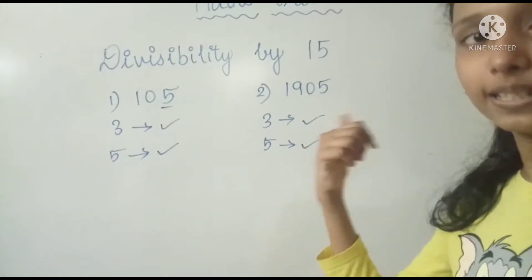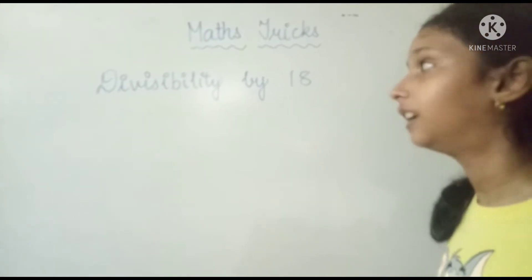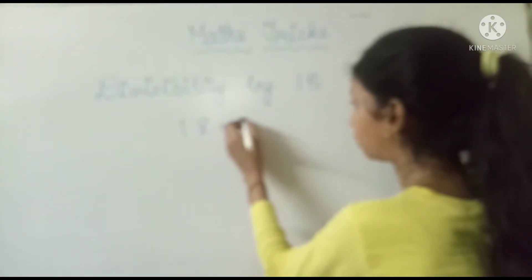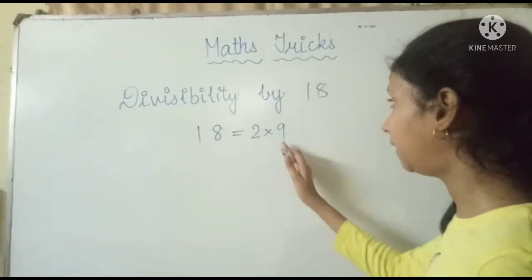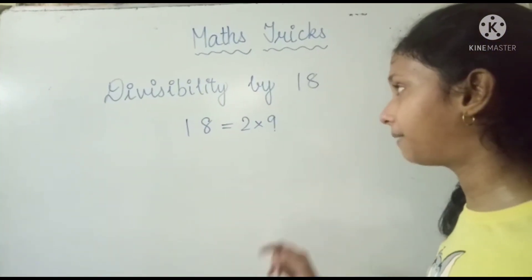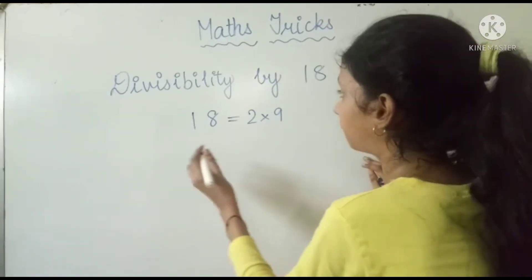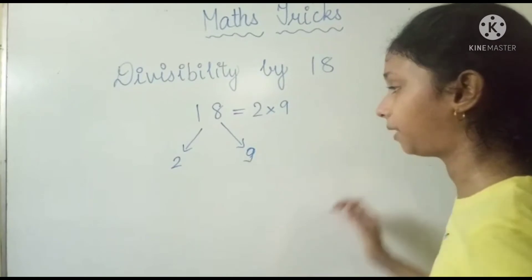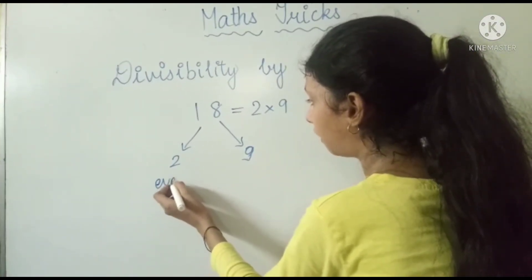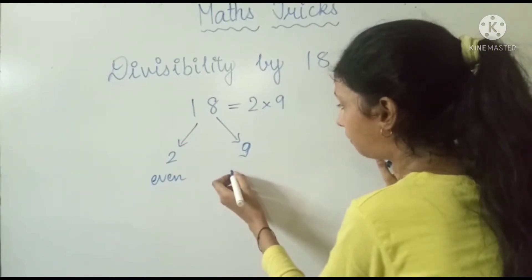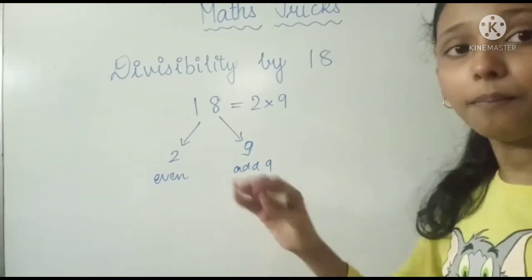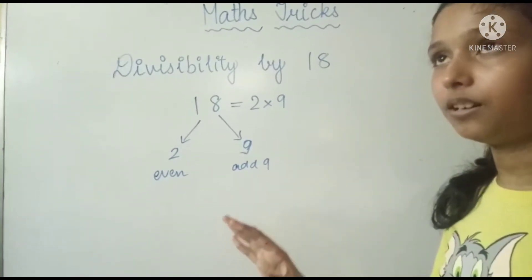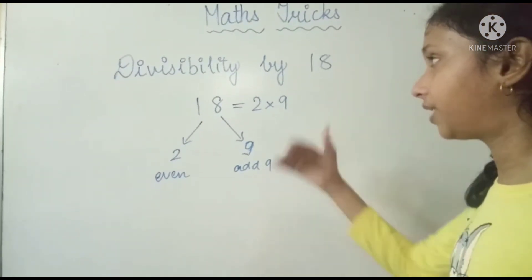Now for divisibility by 18. Same approach: 18 equals 2 multiplied by 9. So the number must be divisible by both 2 and 9. For 2, the number should be even. For 9, the digit sum should add up to 9 or a multiple of 9. In short, an even number which is also divisible by 9 is divisible by 18.